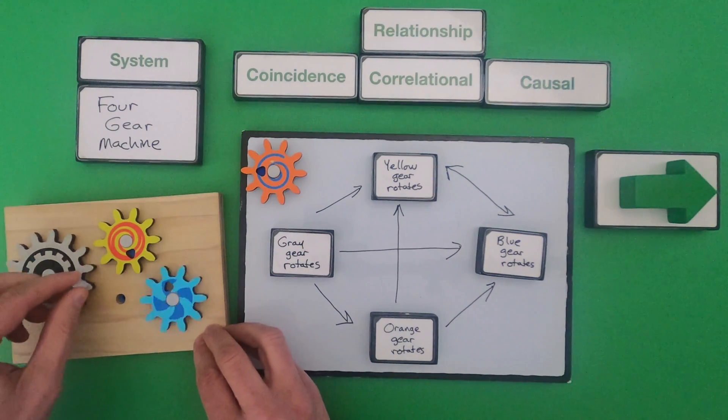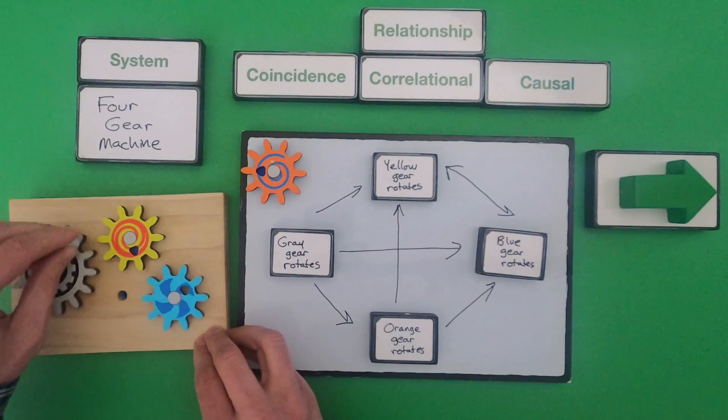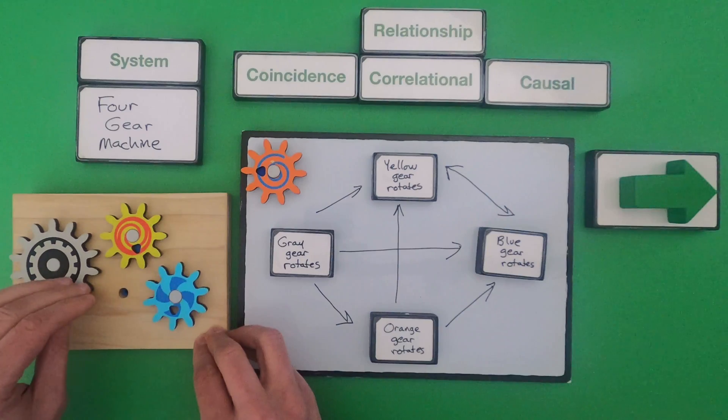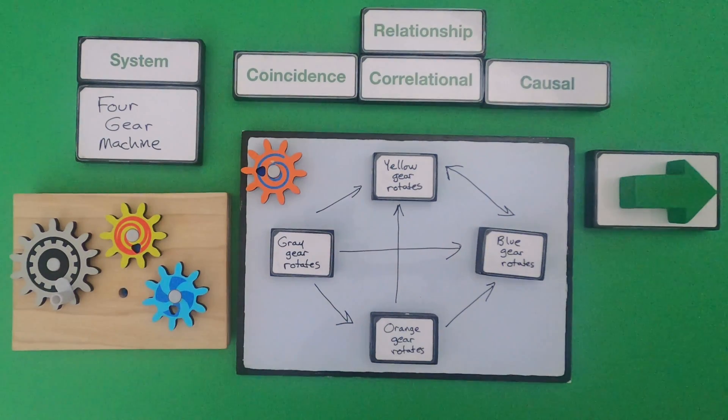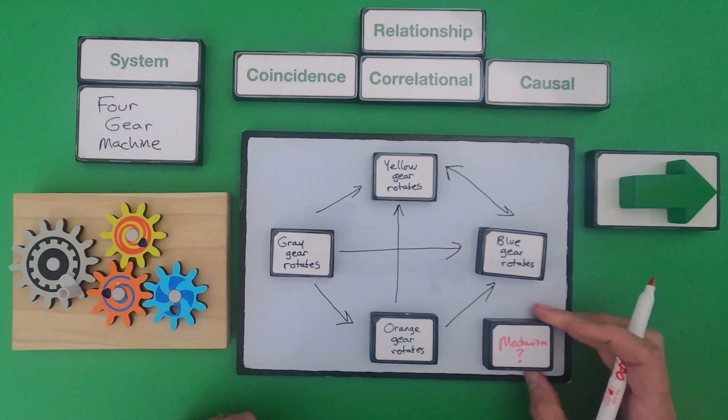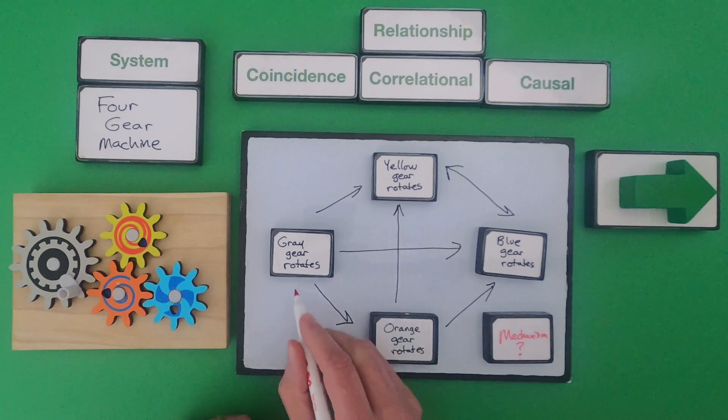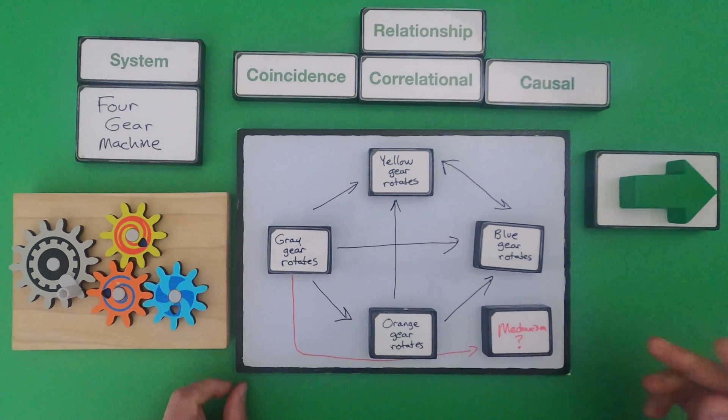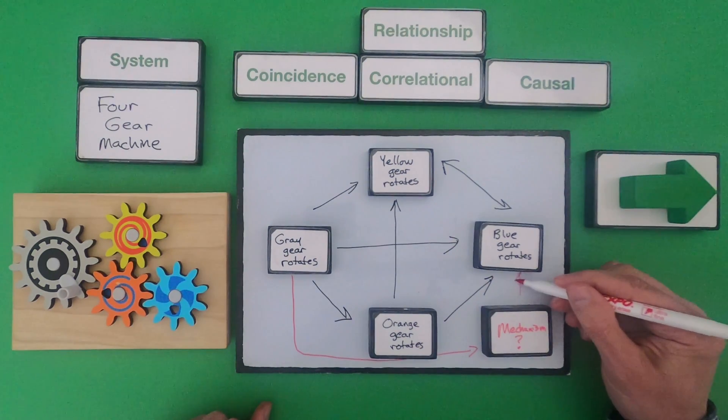And let's see what happens there. Okay, so this is really interesting. So without the orange gear I still get the blue gear moving. And so let me show you my thinking. And I'm going to do this one in red. So I'm going to add this new thing called a mystery mechanism.